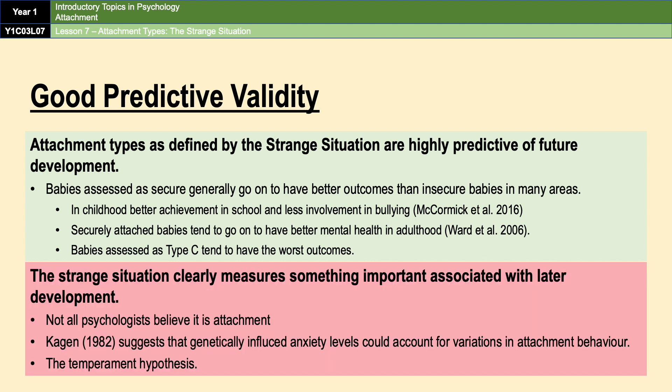However, not all psychologists believe the strange situation is measuring attachment. Kagan suggests that genetically influenced anxiety levels could account for variations in attachment behavior and later development — this is known as the temperament hypothesis. What Kagan is effectively saying is that the anxiety we see in the strange situation could be down to a baby's innate anxiety level rather than attachment quality. It's those anxiety levels that then go on to affect a person's behavior later in life, rather than the attachment itself.